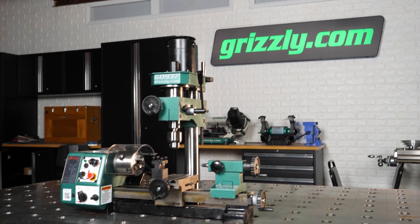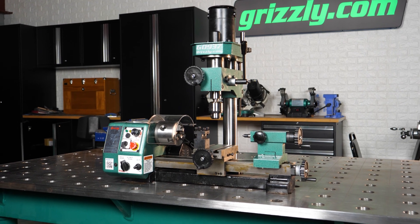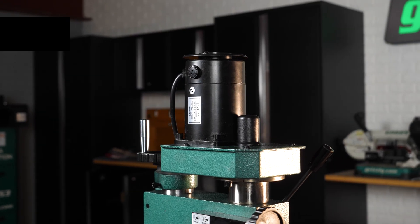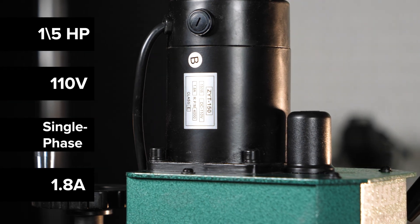The G0937 carries two motors, one for the lathe and one for the mill. Each motor is a dependable one-fifth horsepower, 110-volt, single-phase, 1.8-amp motor.